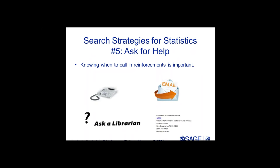My fifth search strategy for statistics is to ask for help. Knowing when to call in reinforcements is important. Reach out to another colleague at your library, a relevant subject expert, or your listserv community. If you've been able to identify a potential producer such as a government agency, get in touch with them — pick up the phone. I picked up the phone and called the Waterborne Commerce Statistics Center because I couldn't make heads or tails of what was going on, but I was pretty sure they were the producer and they were really helpful. Staff at government agencies can indeed be quite helpful, and sometimes a phone call is actually a better way to go than email.